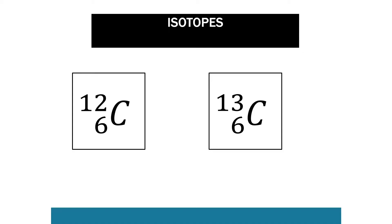So how do they have a different mass number? Well if we look at the example here with carbon-12 and carbon-13, you'll notice that they both have an atomic number of six. This means that they both have six protons. All atoms of the same element will have the same number of protons — this is what makes them that specific element.